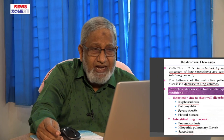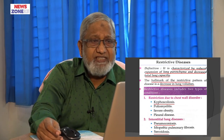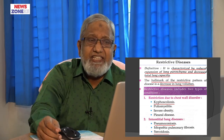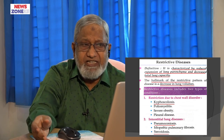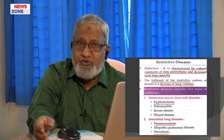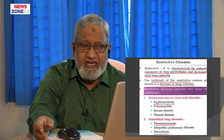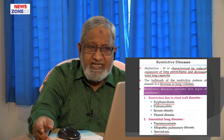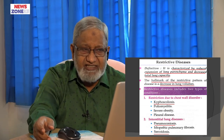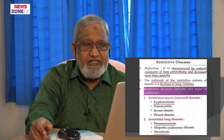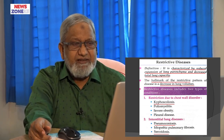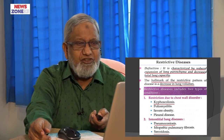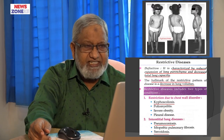Now, what is restrictive disease? Restrictive disease is characterized by reduced expansion of the lung parenchyma due to decreased total lung capacity. Such as restriction due to chest wall disorder or interstitial lung diseases. An example of chest wall disorder is kyphoscoliosis — there is a restriction of the lung expansion.